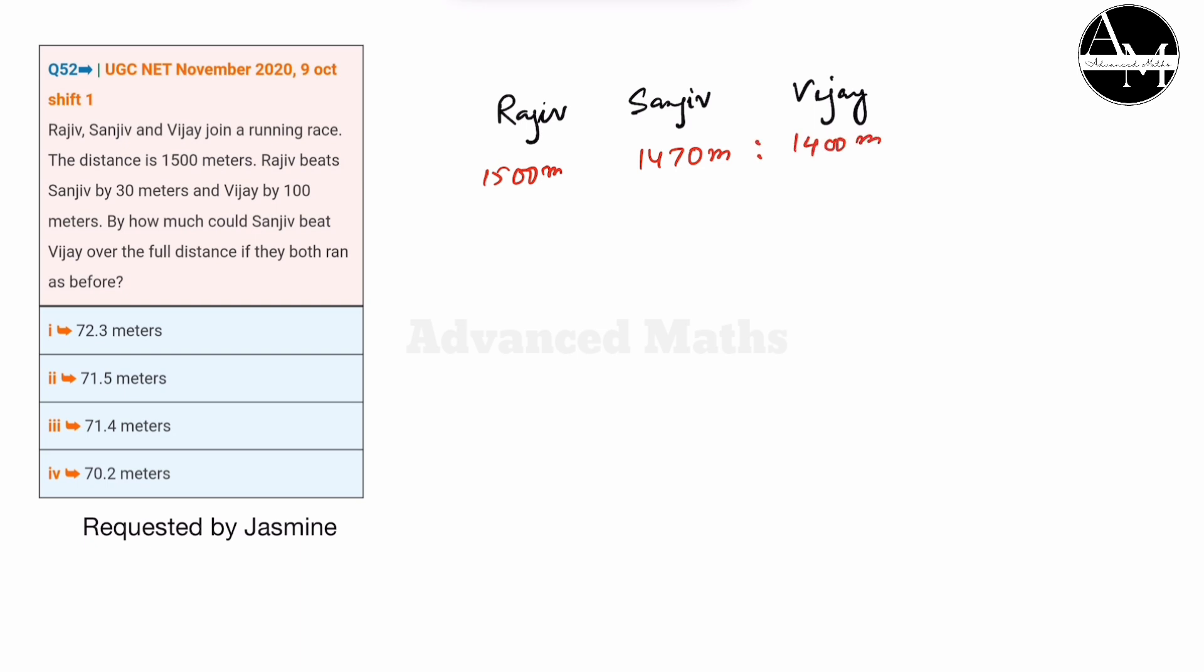Now looking at the ratio, the ratio gives us the distance. The same ratio applied gives 147 meters of distance.